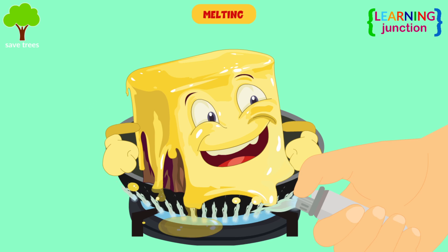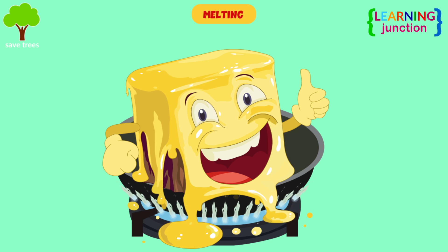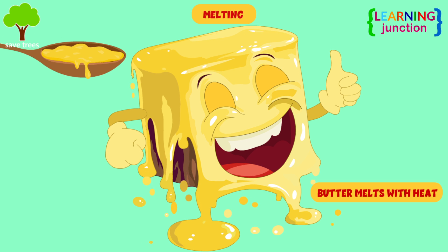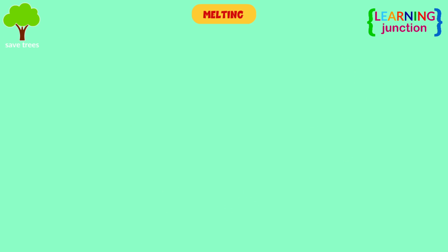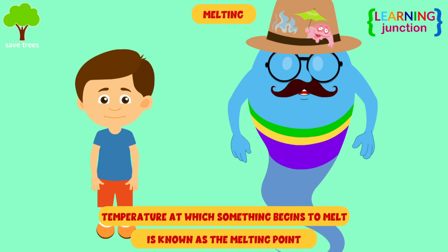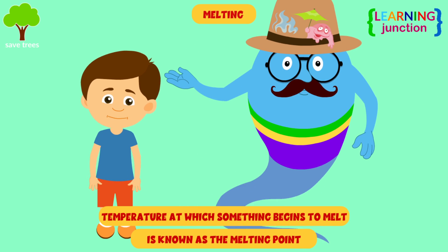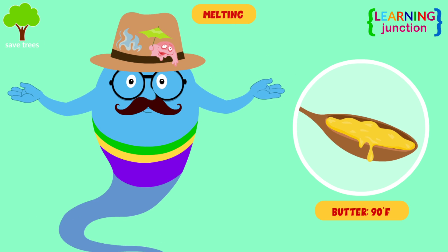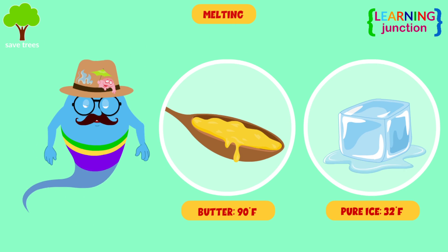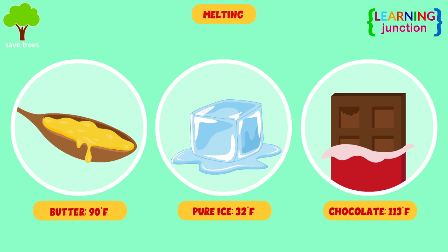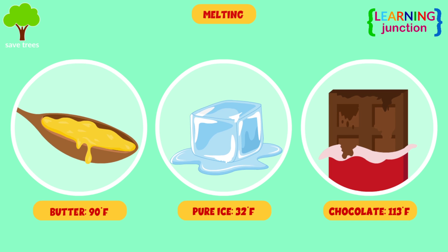When you apply heat to a solid substance, it starts to melt. The butter starts to melt after heating it. The temperature at which something begins to melt is known as the melting point. The melting point of butter is around 90 degrees Fahrenheit. Ice melts at 32 degrees Fahrenheit, and the melting point of dark chocolate is around 113 degrees Fahrenheit.